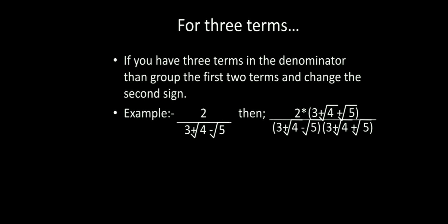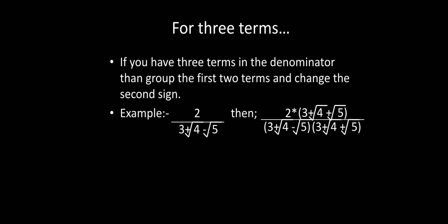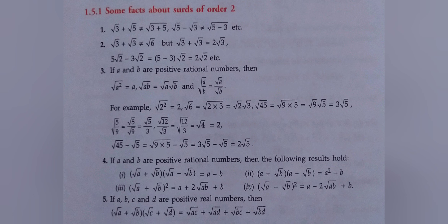For three terms in the denominator, group the first two terms and treat the last term separately. Change the sign between the group of the first two terms and the last term. For example, with 3 plus root 4 minus root 5, multiply numerator and denominator by (3 plus root 4 minus root 5) appropriately. After solving, you get two terms in the denominator which may still have a surd, so apply the two-term rationalization again to get the final simplified answer.